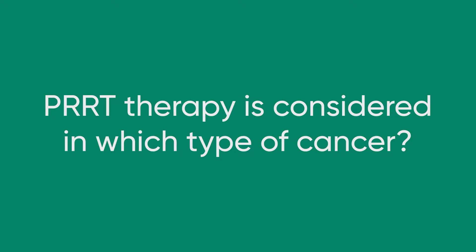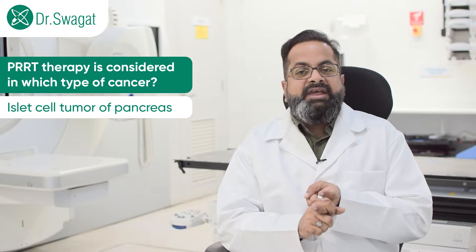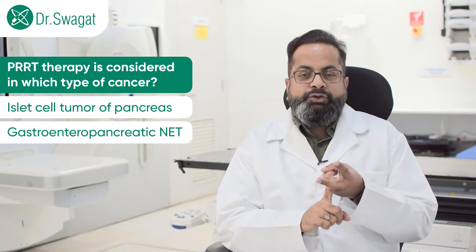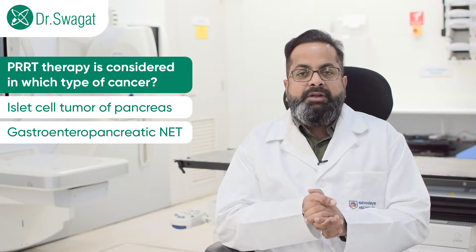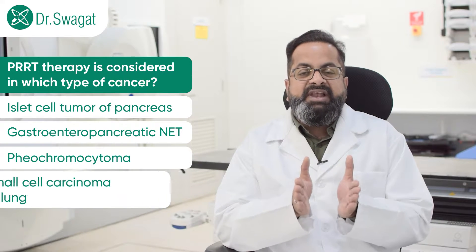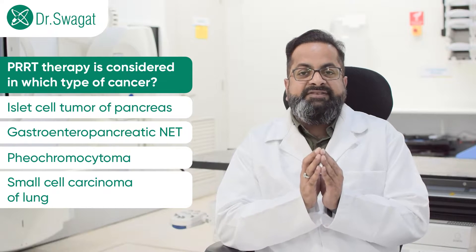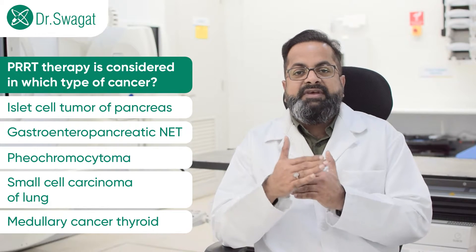Now, the cancers in which PRRT may be considered: number one is islet cell tumor of the pancreas; number two is gastroenteropancreatic neuroendocrine tumor — that is, of the stomach, intestine, or pancreas; pheochromocytoma; small cell carcinoma of the lung; and a specific type of thyroid cancer — medullary cancer of the thyroid — which is not responding to iodine. These are the usual indications for PRRT.